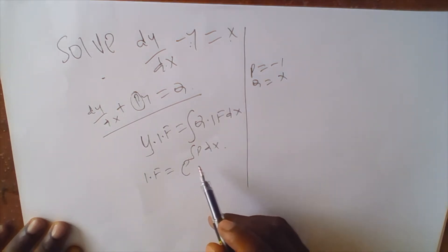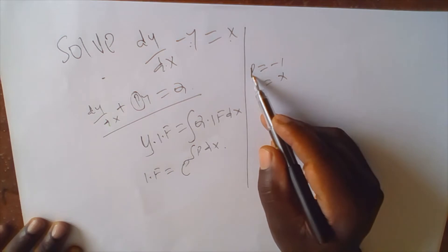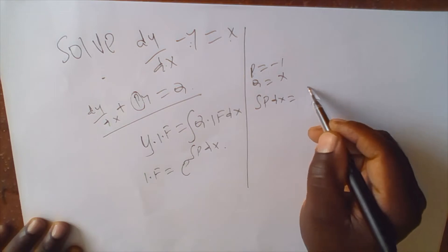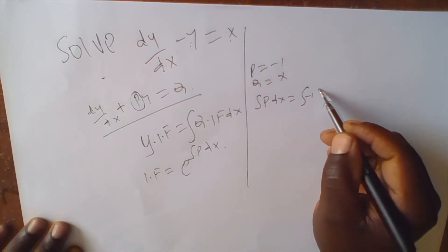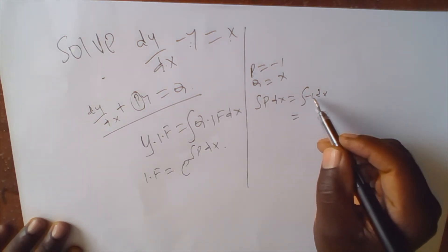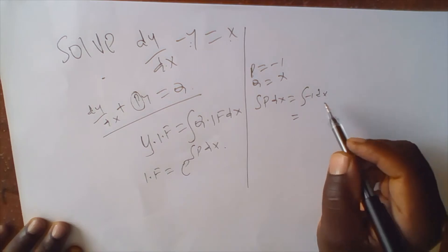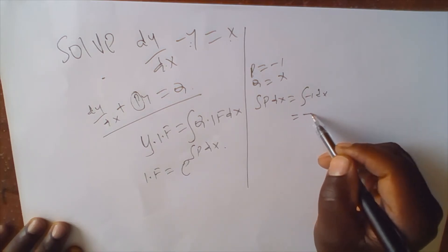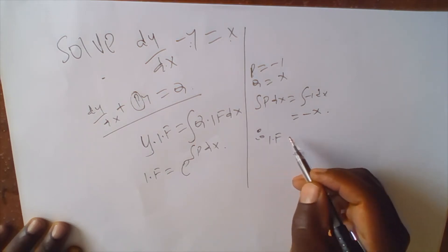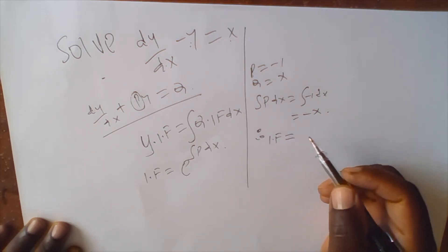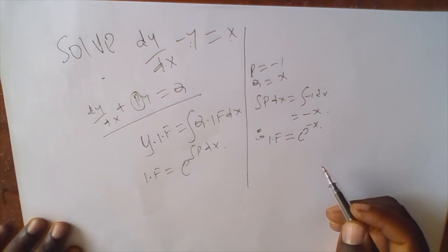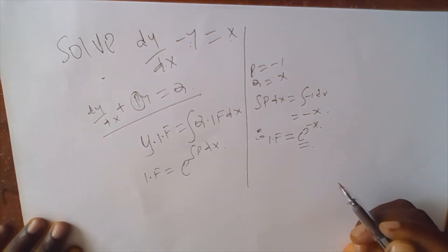Since P equals negative 1, we now need to get the integrating factor. The integrating factor is given by e to the integral of P dx. The integral of P dx equals the integral of negative 1 dx, which equals negative x. Therefore the integrating factor equals e to the power of negative x.